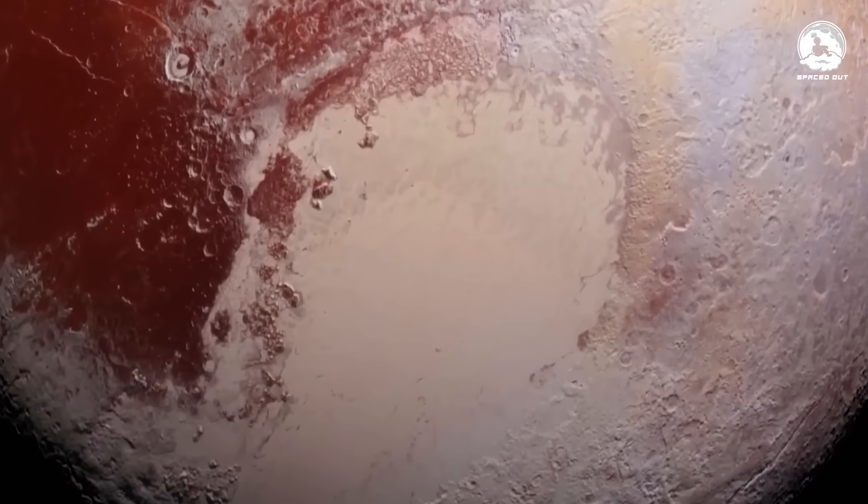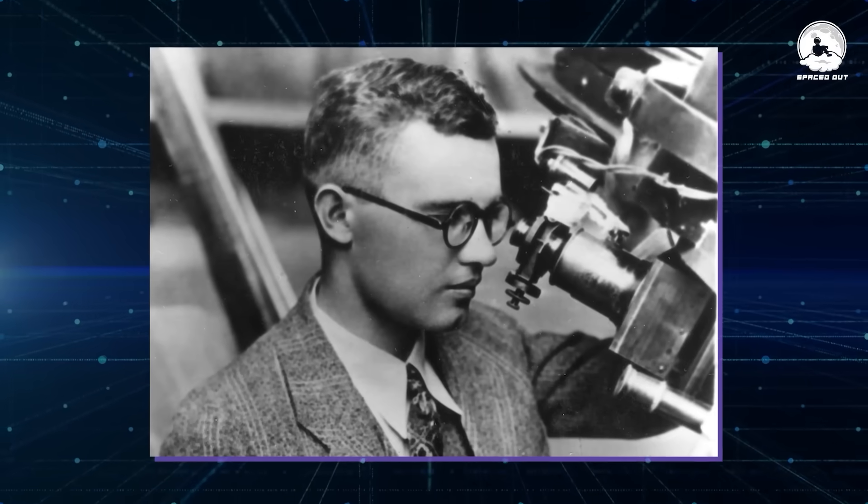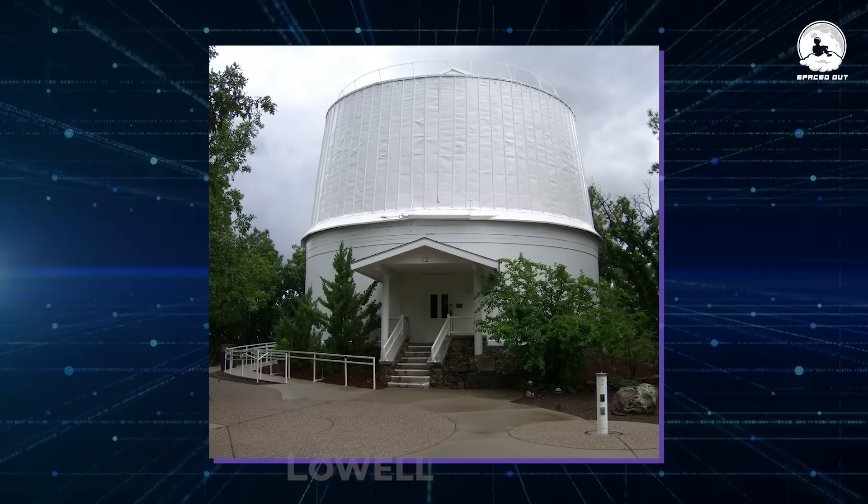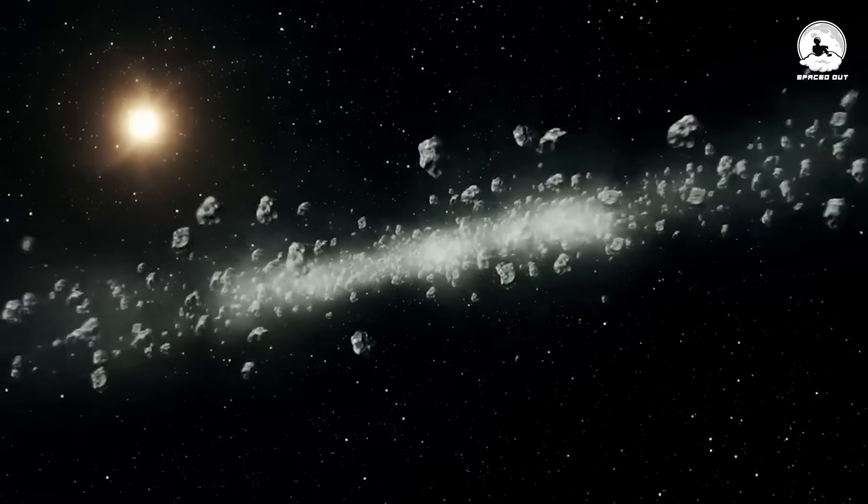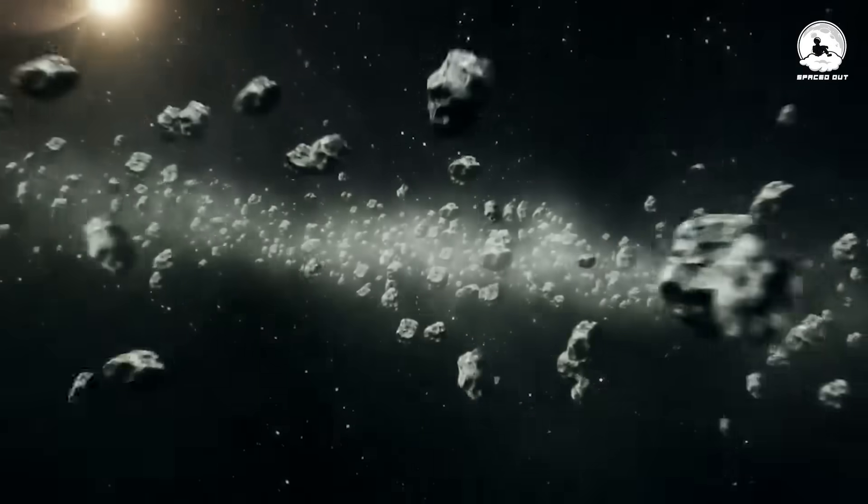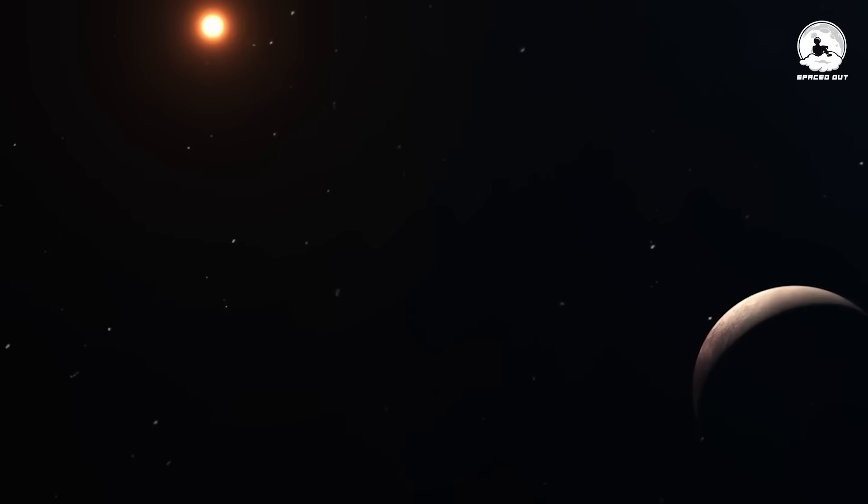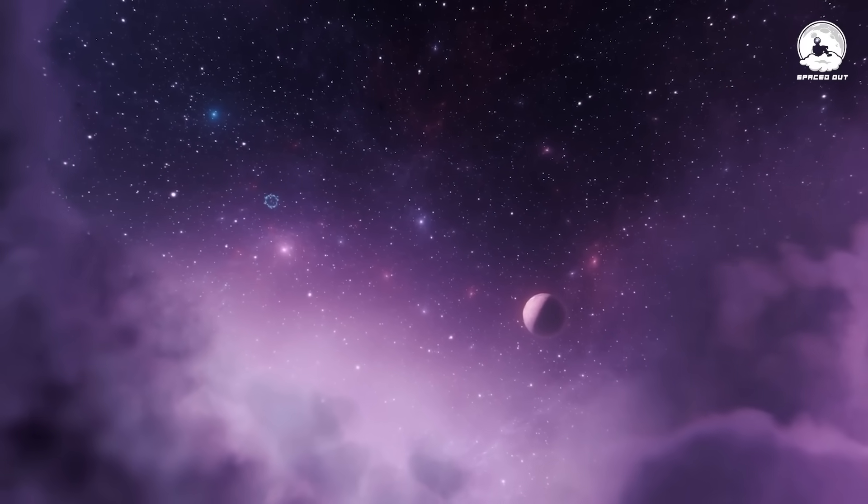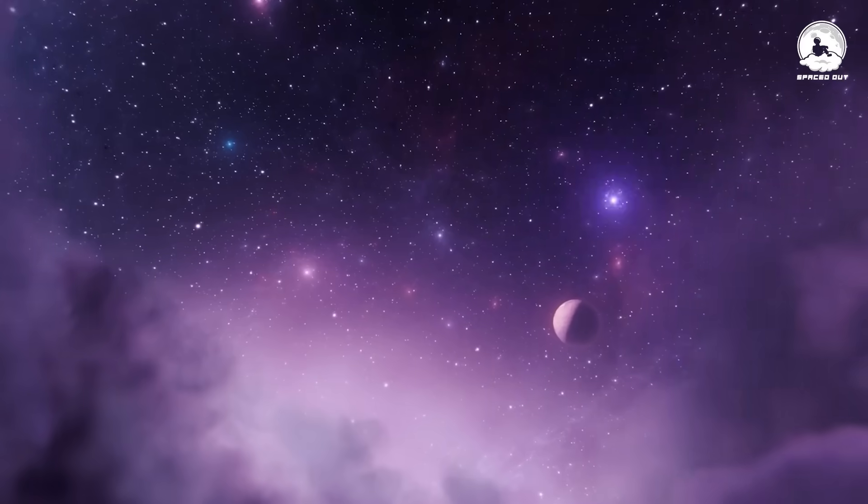Pluto, the first Kuiper Belt object, was found by Clyde Tombaugh at the Lowell Observatory in February 1930. This shows that the Kuiper Belt had been long discovered before its concept came into existence through the discovery of Pluto, which led to speculation about other objects existing beyond Neptune's orbit.